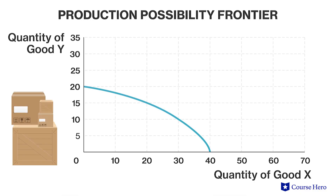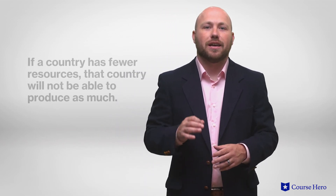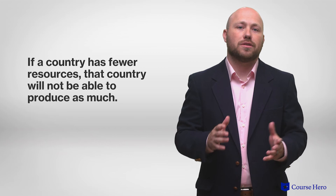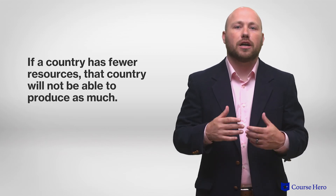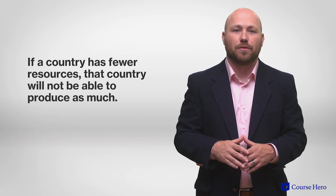A production possibility frontier that shifts to the left would indicate the economy is contracting and losing its ability to produce at the previous level. Because the PPF shows how much can be made given a set of resources, if a country has fewer available resources, like labor or capital, the country will not be able to produce as much as before.